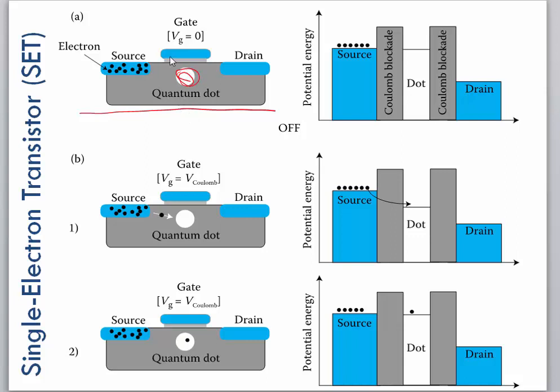So what happens at the gate when the gate voltage is set to zero, so it's standard off state? We have, of course, the Coulomb blockade that we talked about in the previous lecture.